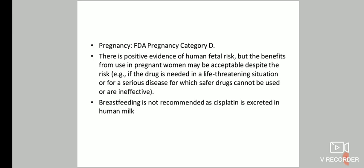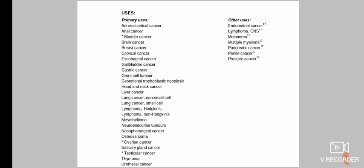Cisplatin is FDA pregnancy category D — there is positive evidence of human fetal risk, but benefits from use in pregnant women may be acceptable despite the risk, for example, if the drug is needed in a life-threatening situation or for a serious disease for which safer drugs cannot be used or are ineffective. Breastfeeding is not recommended as cisplatin is excreted in human milk. These are the various uses of cisplatin.